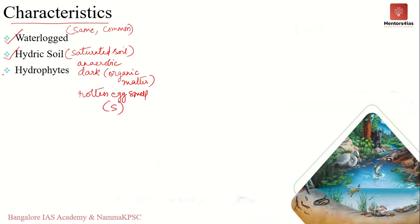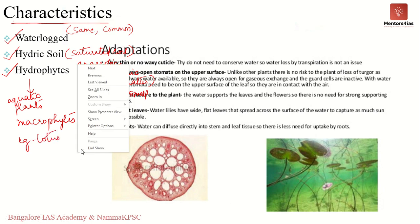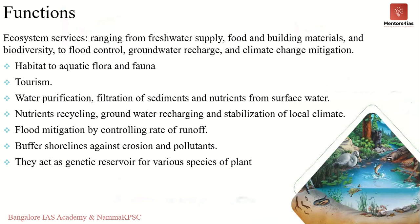Finally, the plants found along wetlands are known as hydrophytes, or sometimes referred to as macrophytes — aquatic plants which are adapted to grow in or on water. For example, the lotus. There are certain adaptations found in aquatic plants — you can pause the video here and go through these points, as sometimes you may have questions based on the adaptations of plants to wetlands.